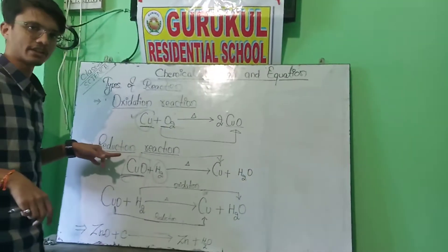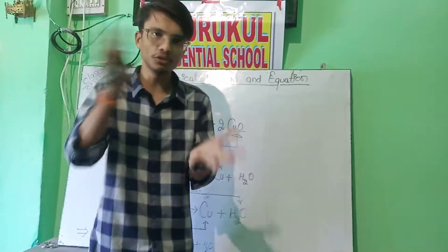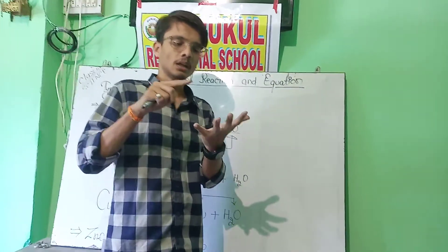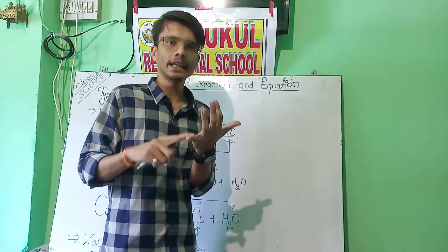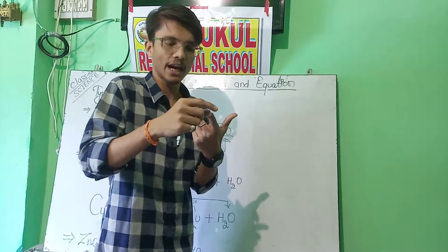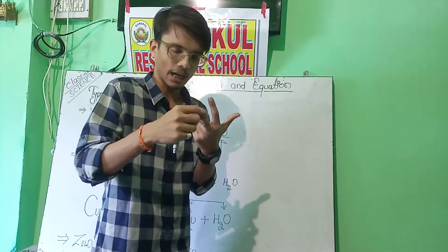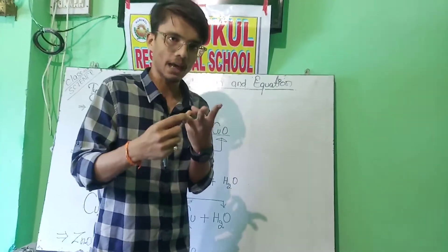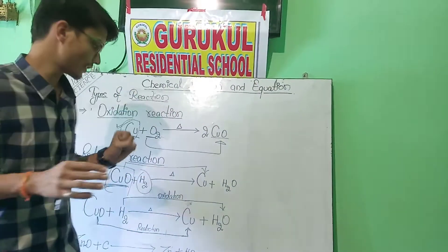The next reaction is the reduction reaction. Reduction reaction is just the opposite of the oxidation reaction. The definition of reduction is: addition of hydrogen, removal of oxygen, or gain of electron. If any of these three things is happening in a reaction — addition of hydrogen, removal of oxygen, or gain of electron — then we can say this reaction is an example of a reduction reaction.